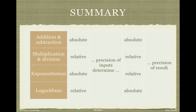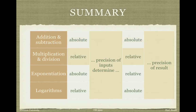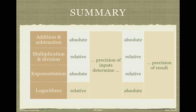Those are all the rules you need for most problems. In summary: for addition and subtraction, count digits past the decimal — whichever input has the fewest determines the absolute precision of the final answer. For multiplication and division, use sig figs — whichever number has fewer sig figs determines the relative precision of the final answer. For exponentiation and logarithms, the rules mix: the absolute precision of the exponent determines the relative precision of the result, and the relative precision of the logarithm's argument determines the absolute precision of the result. Apply these rules consistently and you won't make sig fig mistakes.